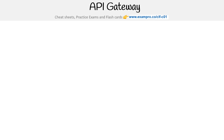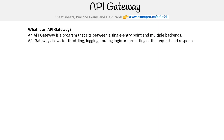So what is API gateway? It is a program that sits between a single entry point and multiple backends. API gateway allows for throttling, logging, routing logic, or formatting of the requests and response. When we say request and response, we're talking about HTTPS requests and responses.